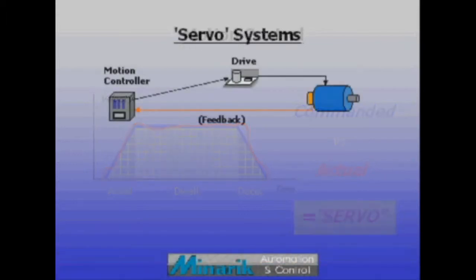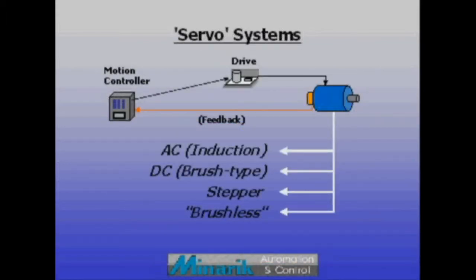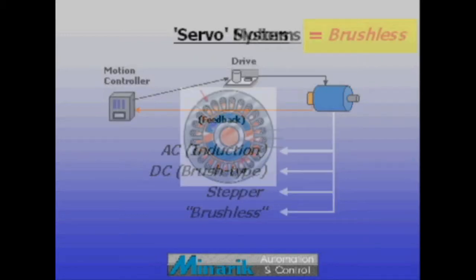In motion control, closed loop systems can use any motor technology: AC, DC brush type, stepper, brushless, linear, or ceramic.